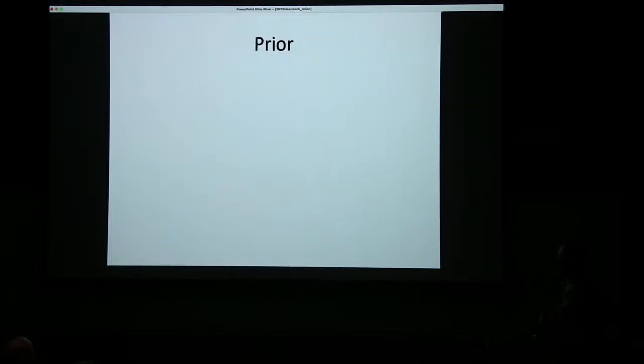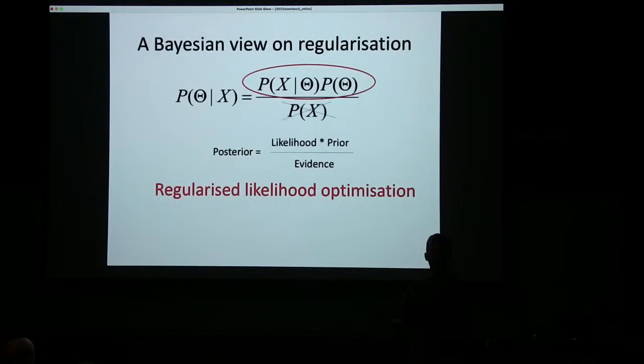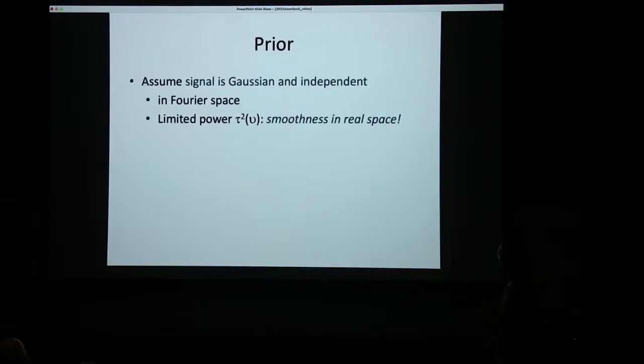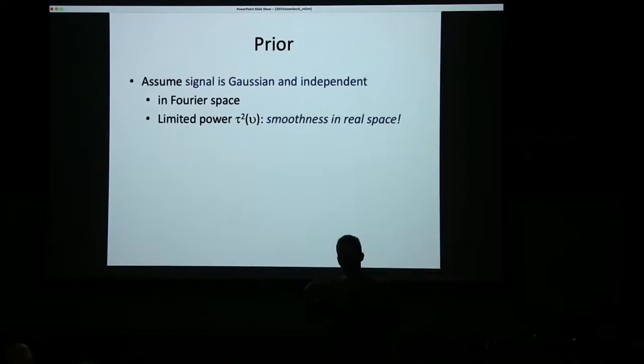That is what RELION stands for: Regularized Likelihood Optimization. We multiply the likelihood function — marginalizing over all orientations — by a prior on the model. The one million dollar question becomes: what information do I have about the model — P(theta), the probability of the model — if I don't take the data into account? What do I know about my reconstruction if I don't look at the data? And please let it be something that can be optimized nicely in a computer. We came up with the following, which has been done in parts of mathematics already: if we assume not only that the noise in the images is Gaussian and independent, but also that the signal is Gaussian and independent.